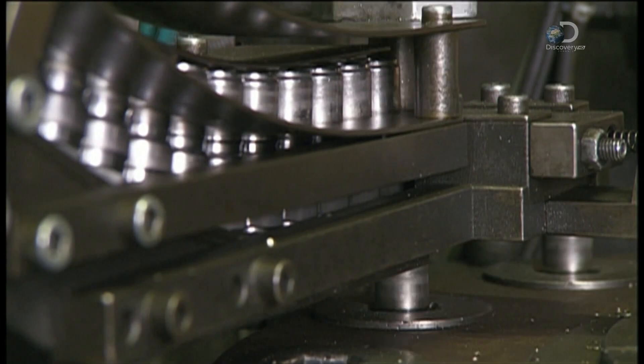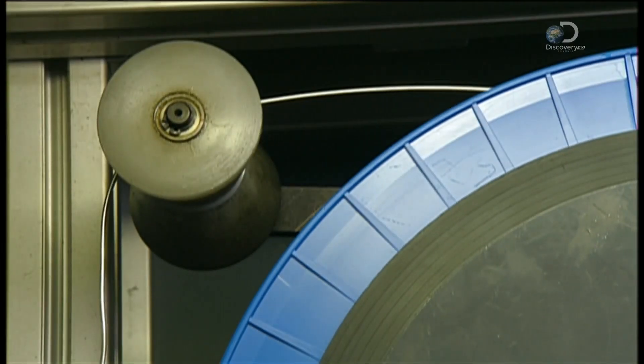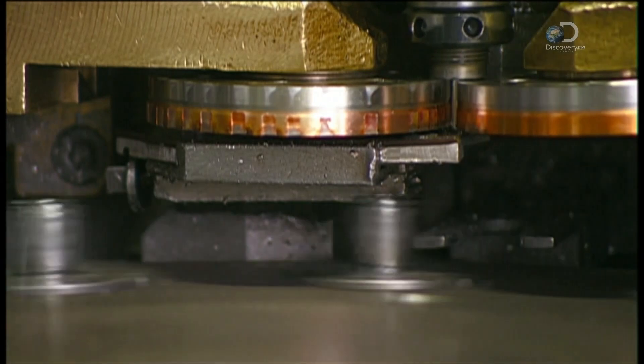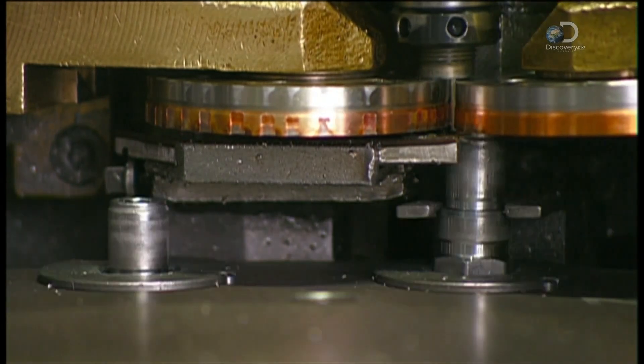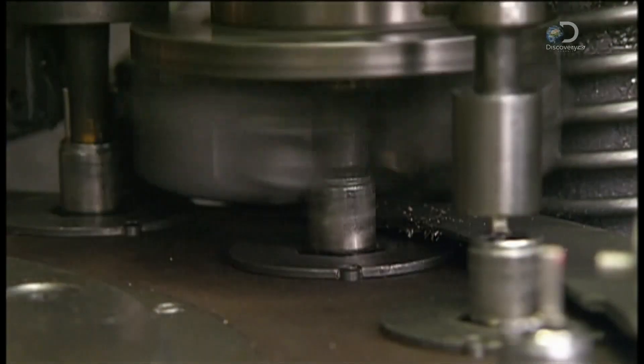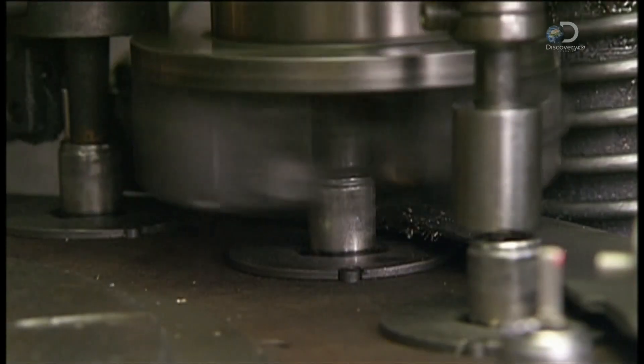A conveyor now shuttles the spark plug shells forward as nickel alloy wire unwinds overhead. An automated welder fuses the wire to the shells. This wire will serve as the spark plug's ground electrode, and it will be bent towards a firing electrode later. The space between them will contain the spark.